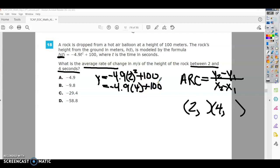And if I plug that into my calculator, I get negative 19.6 plus 100, which equals 80.4. So 80.4 is my y value that goes with 2.